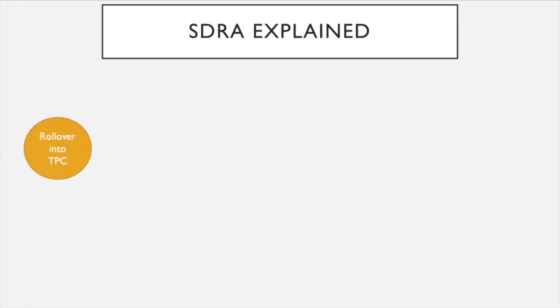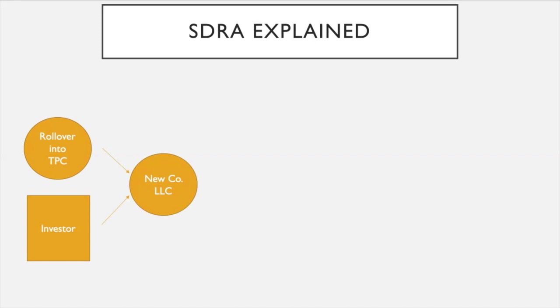I'm going to explain what a self-directed retirement account partnering with a business would look like. Let's say you take an old retirement account and roll it over into a third-party custodian — your retirement account now becomes self-directed. You meet an investor who knows a lot about fixing and flipping properties, you trust them, read their projections, and you're confident in what they can do. You negotiate, create a partnership, and form a new company — we'll call it New Company LLC. Your shares and profits all need to be negotiated within the operating agreement at the time of incorporating this entity.